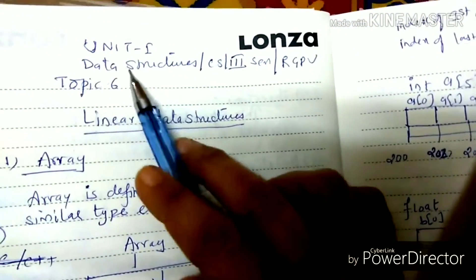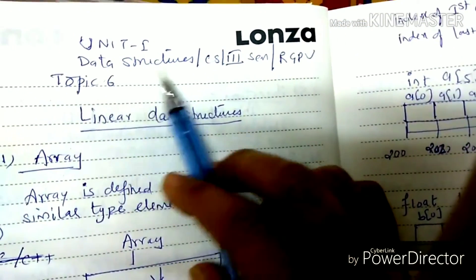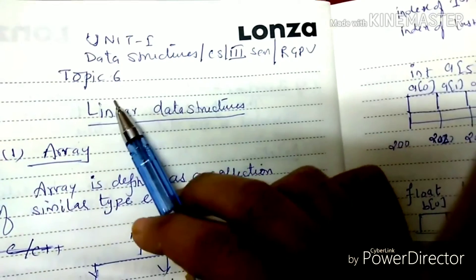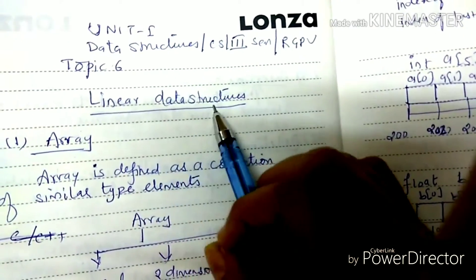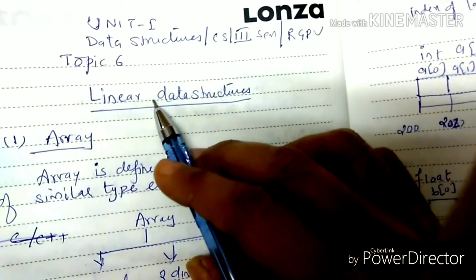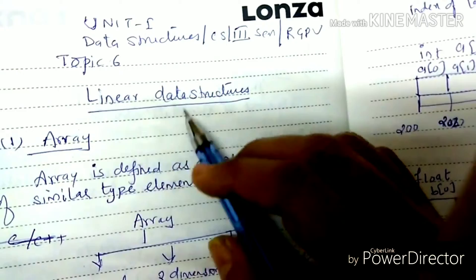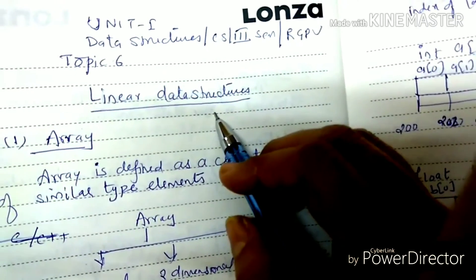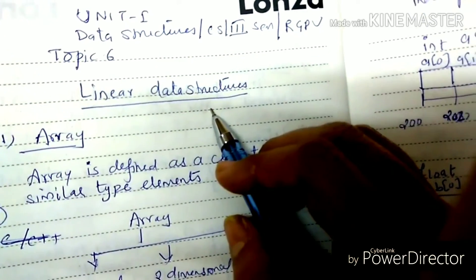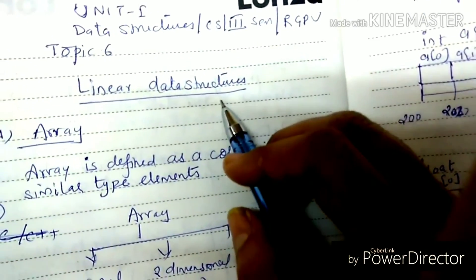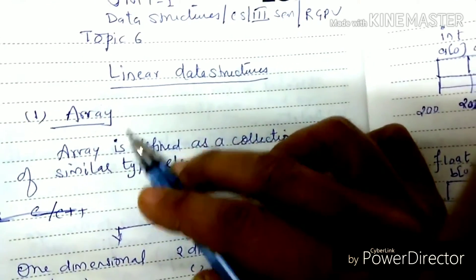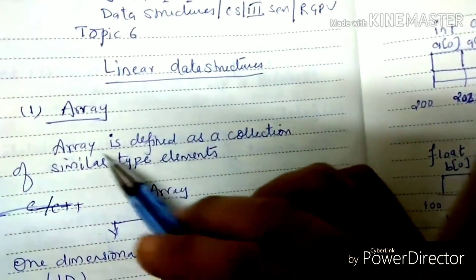Next topic is Unit 1, Data Structures, 3rd Semester RGPB syllabus — linear data structures. In linear data structures, data is stored in sequential order, one after the other. So the first example is array. What is array?